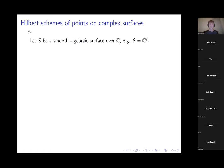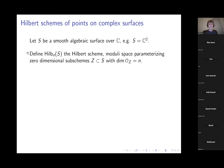We'll define the Hilbert scheme, denoted Hilb_n(S) for n some positive integer. It's a moduli space which parametrizes all of the zero-dimensional subschemes of S. If you have a zero-dimensional subscheme it may look like a collection of points, and a natural invariant is the dimension of the structure sheaf of that subscheme — that's what the n labels.